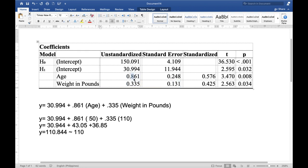So this 0.861 and this 0.335 is the unstandardized beta estimates. This is the value or the increase of y in every unit increase in x. So we have here the x1 or the independent variable one age and the independent variable two weight in pounds.